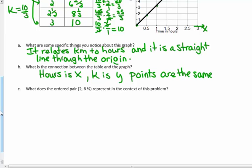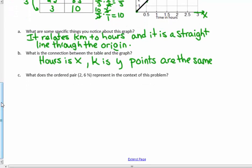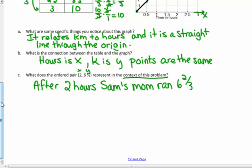What does the ordered pair 2, 6 and 2 thirds represent in the context of this problem? Well, after 2, the variable x is hours. After 2 hours, Sam's mom, the details of the story here. Sam's mom ran 6 and 2 thirds, the label of the y is the kilometers, her distance. So, after 2 hours, Sam's mom ran 6 and 2 thirds kilometers.